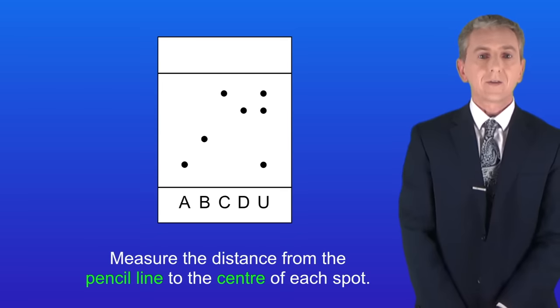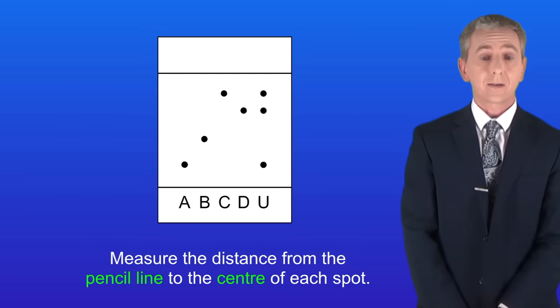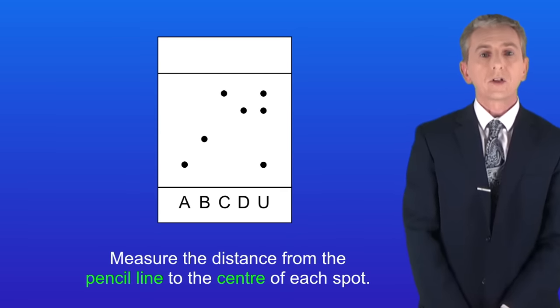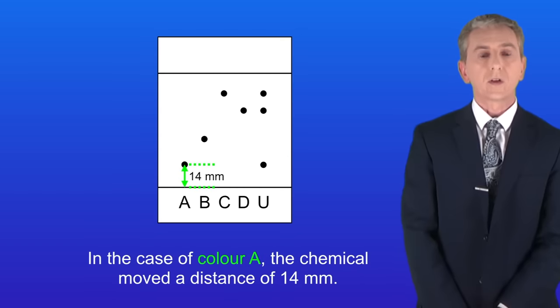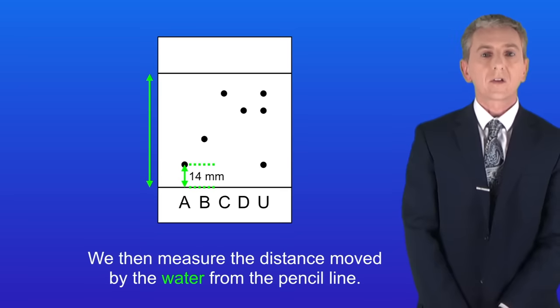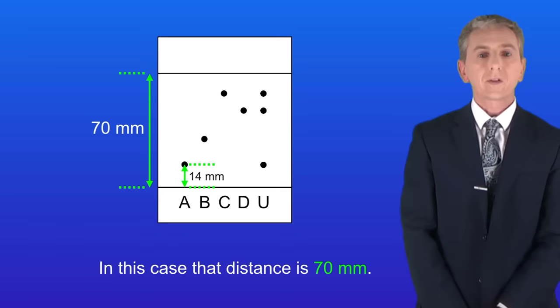The first thing we need to do is measure the distance from the pencil line to the center of each spot. I'm going to do that for the spot produced by color A. In this case the chemical moves a distance of 14 millimeters. We then measure the distance moved by the water from the pencil line. In this case that distance is 70 millimeters.